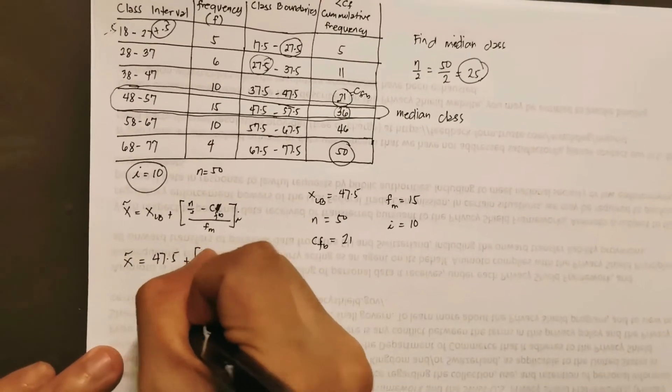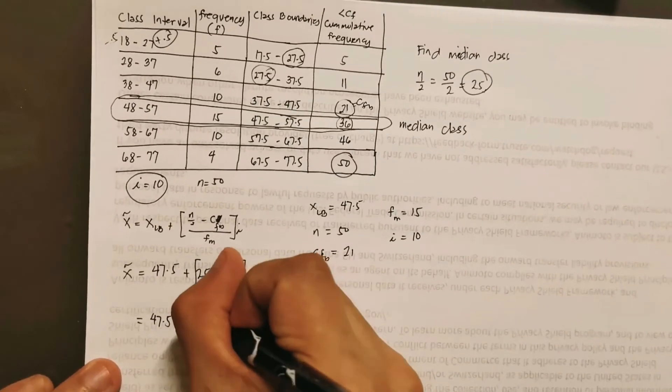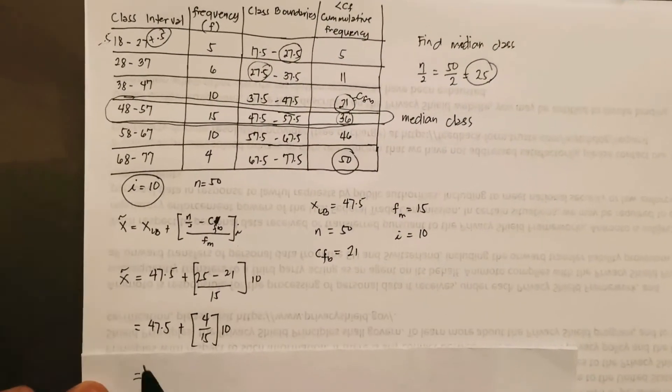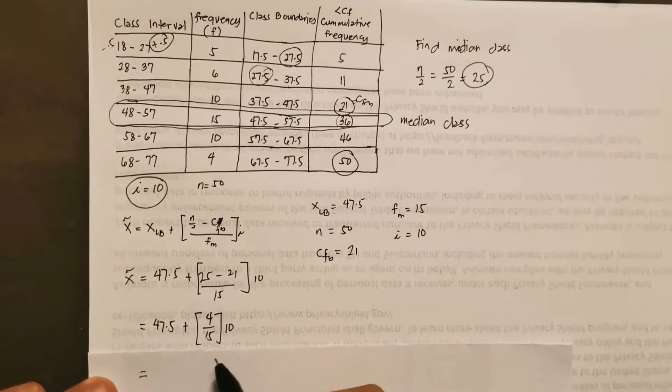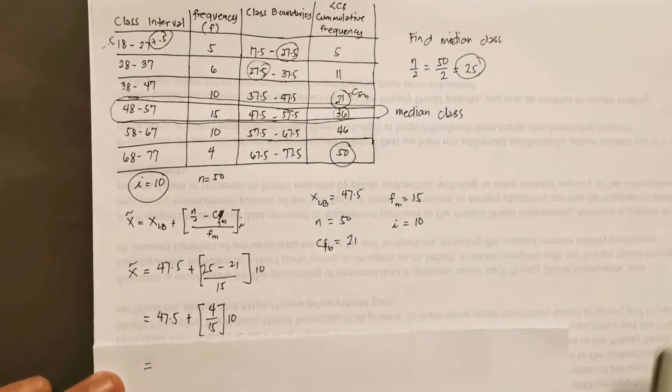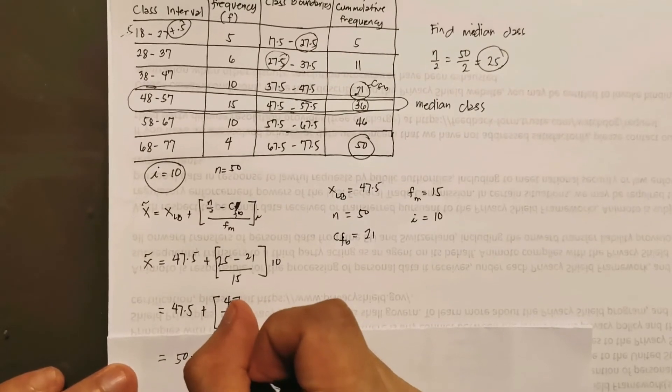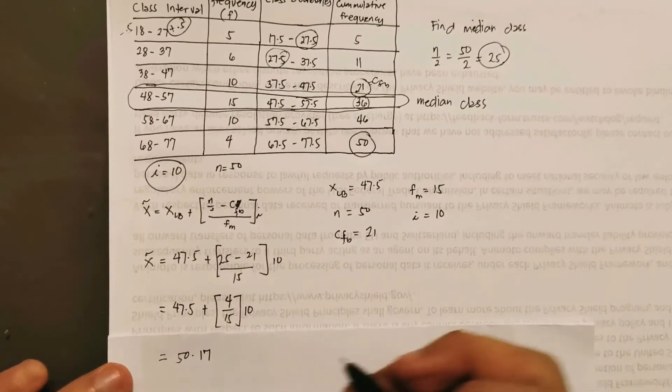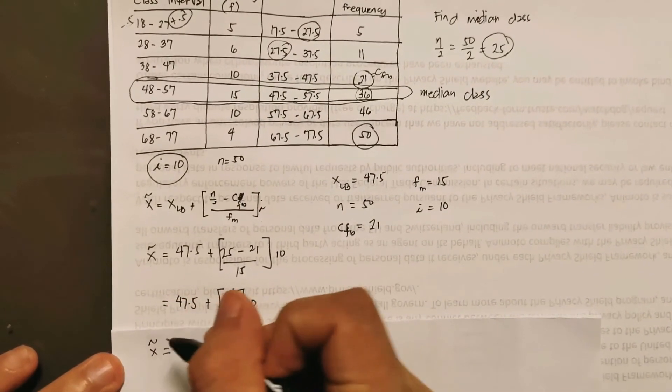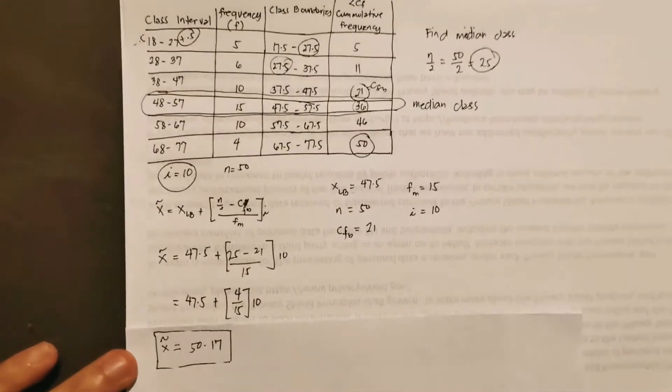This is 47.5 plus, of course, that's 4 over 15, times 10. Okay? So as we arrived here, we have now 47.5 plus, of course, this expression. Now, as we will solve this one, of course, use your magic calculator to do it a lot easier. The answer for this one is 50.17, as we round it to the nearest hundredths. Well, nearest hundredths because commonly, answer is only rounded to the nearest hundredths. Okay? So that is our median for this example. So you notice the process is a little bit long compared to solving the mean, but of course, nothing is so difficult so long as you know how to do it.